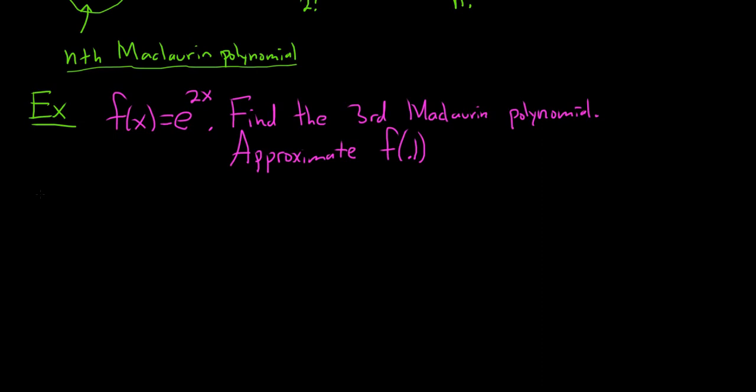Solution. So I like to do it in steps. So basically, whenever you're finding a Maclaurin or Taylor, just think about how many derivatives you need. We're doing the third Maclaurin polynomial, the third degree polynomial. So we need three derivatives here. So let's go ahead and write everything down.